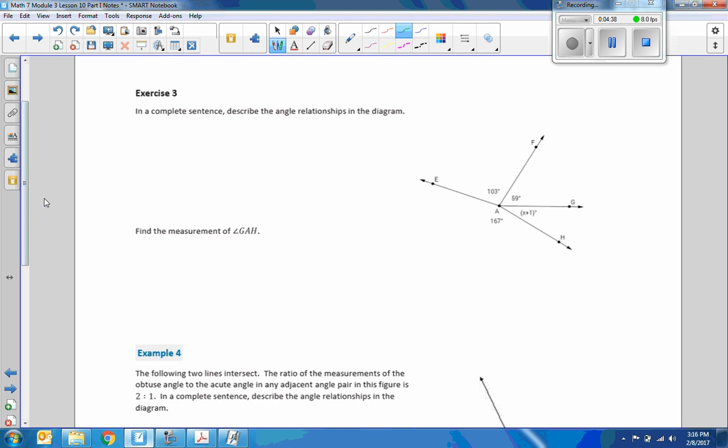I'm on Exercise 3. In a complete sentence, describe the angle relationship in this diagram. It says angle EAH. I'm going to do the same thing here. EAH. Angle EAH is this big angle right here. And then angle GAH. GAH is right here.